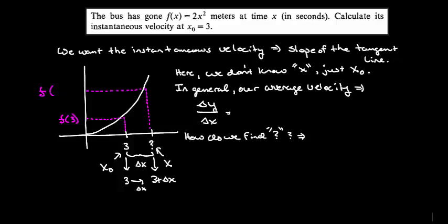If we went over by 1, then it was 4. If we went over by 0.1, it was 3.1. So this guy up here must be the function evaluated at 3 plus delta x. Now we can go ahead and compute our average velocity, which will change into our instantaneous velocity once delta x goes towards 0.